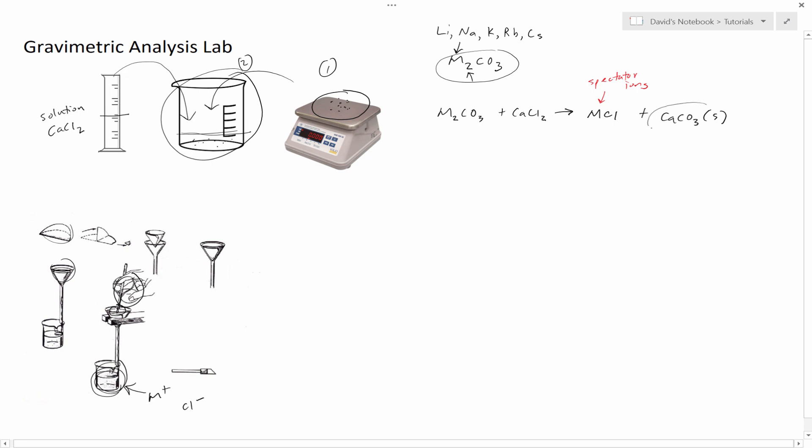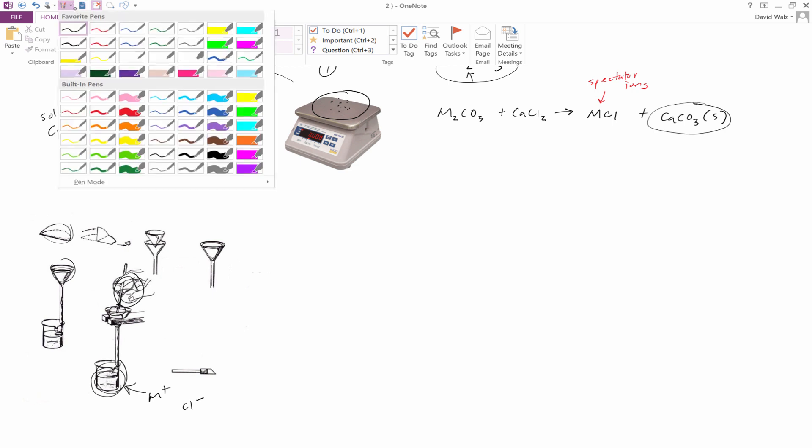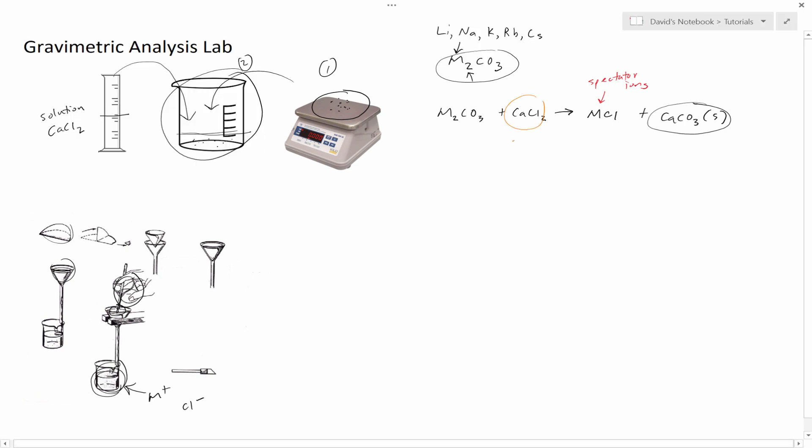This is what we want. The calcium chloride is going to be done in excess. What that means is it should precipitate all of this. So all of the CO3 2 minus should become solid calcium carbonate.